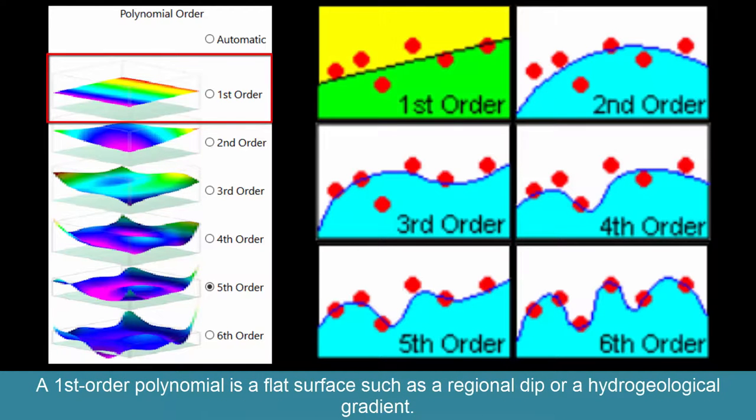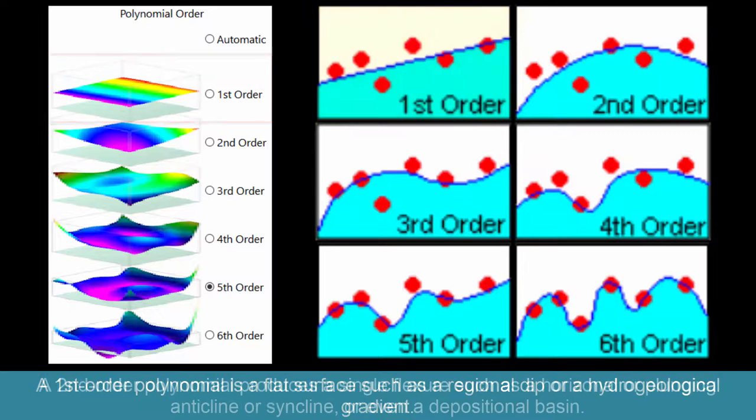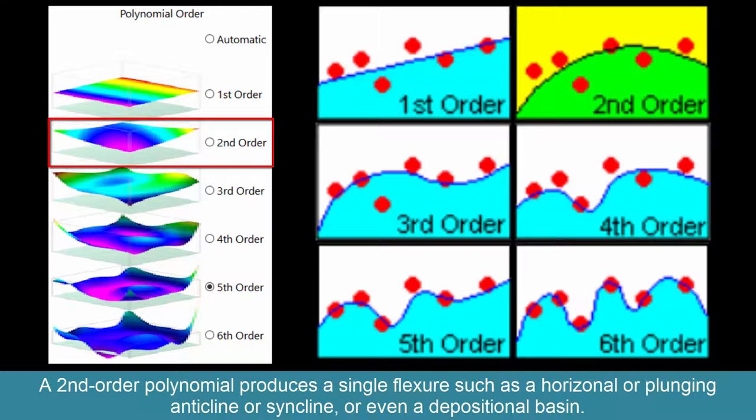A first-order polynomial is a flat surface, such as a regional dip or a hydrogeological gradient. A second-order polynomial produces a single flexure, such as a horizontal or plunging anticline or syncline, or even a depositional basin.